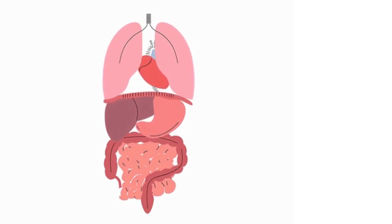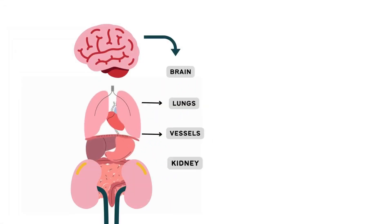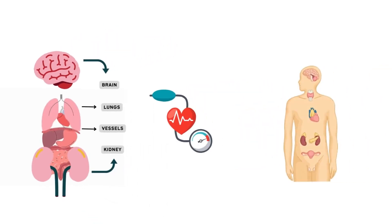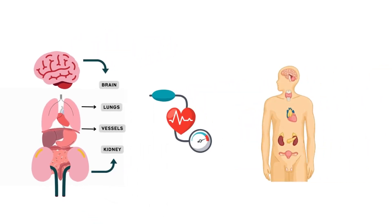Basically, the kidney, brain, lungs, and vessels in our body all influence the work of the heart and also blood pressure. Likewise, the hormonal system controls the cardiovascular system and alters blood pressure and heart rate as well.